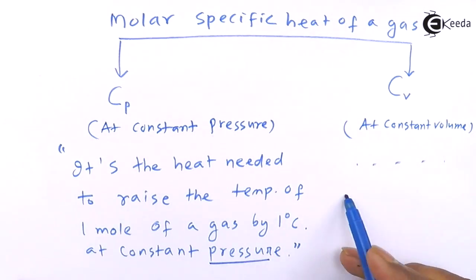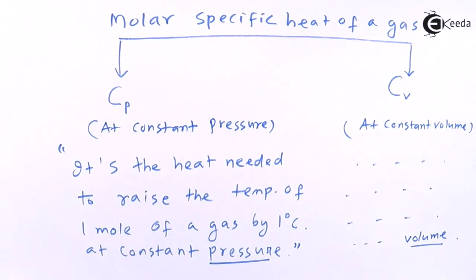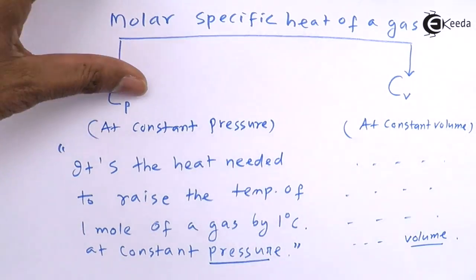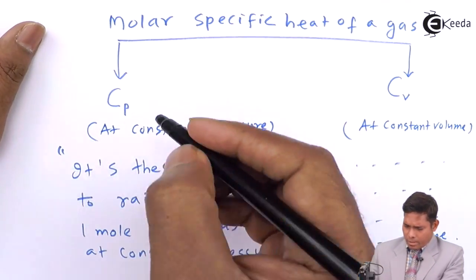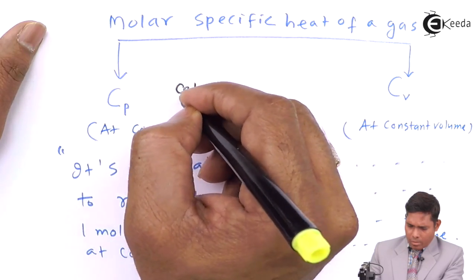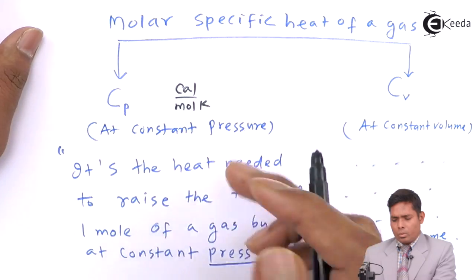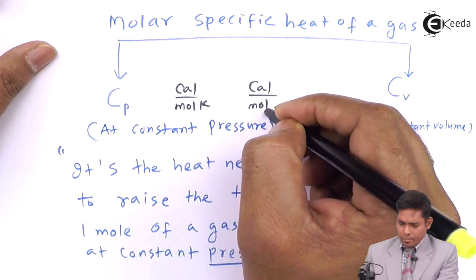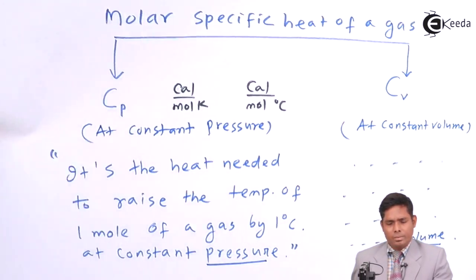For specific heat at constant volume, everything remains the same — only volume is kept constant instead of pressure. You raise the temperature by one degree under constant volume condition. The unit will be calories per mole kelvin, or calories per mole degree centigrade, or kilocalories per kilomole.